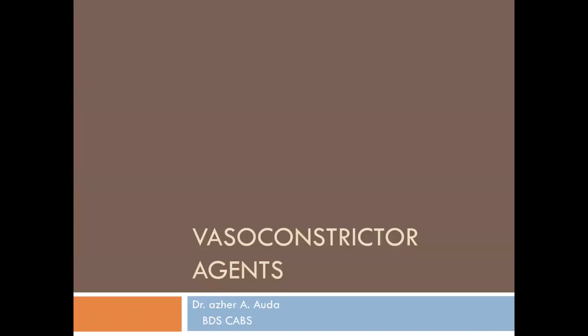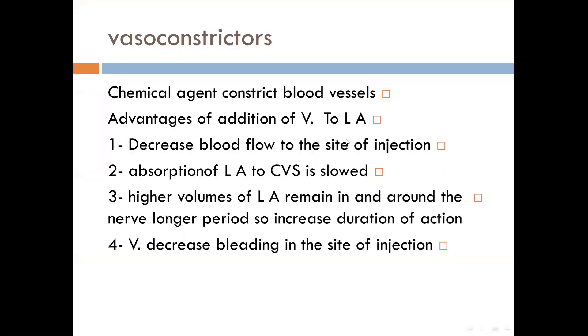Hello everyone. Today is the Vasoconstrictor Agents. We will continue the previous presentation and talk about the constituents of the cartridge. We are going to talk about the vasoconstrictors which are also available in the cartridge. Of course, the vasoconstrictor is a drug or chemical agent we use in the cartridge, and the function of vasoconstrictors is to constrict the blood vessels.